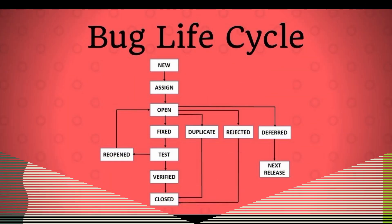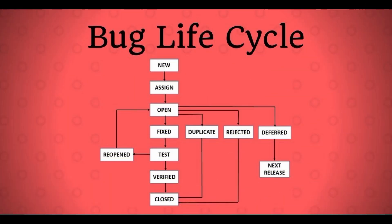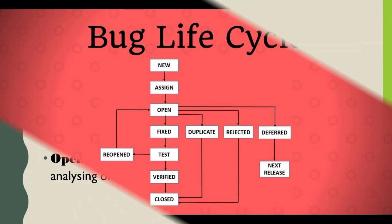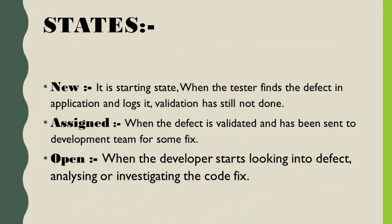First comes the new state. This is the starting stage of a defect life cycle. This stage comes when the tester finds a new defect in the application and logs it. As per the tester, it can be a defect but its validation is still pending.